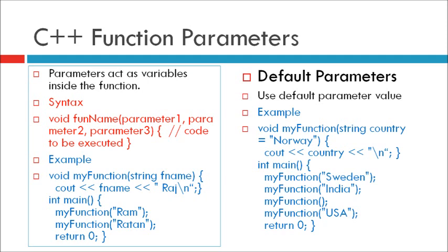Output of this program is Ram Raj, Ratan Raj. When a parameter is passed to the function, it is called an argument. So from the above example, fname is a parameter while Ram and Ratan are the arguments.